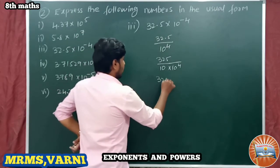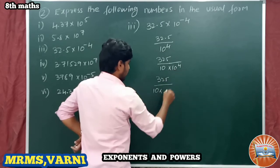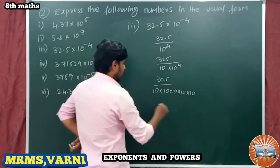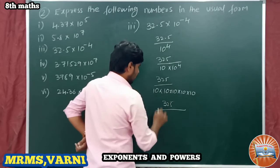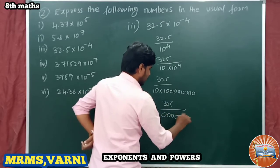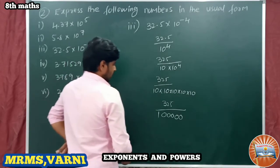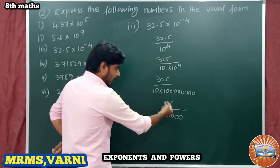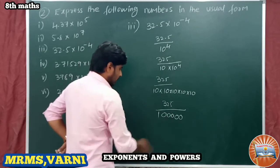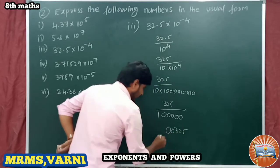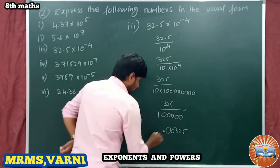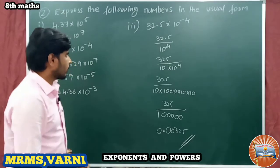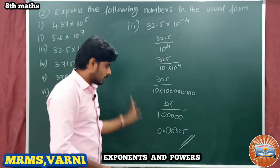So it becomes 325 divided by 10 into 10^4, which is 10 into 10 into 10 into 10 — giving 325 divided by 100000. If I remove this denominator, we keep the decimal point at 5 decimal places. We have only 3 digits, so I place 2 zeros in front of 325 and put the decimal point, giving 0.00325. This is the usual form of 32.5 into 10 power minus 4.